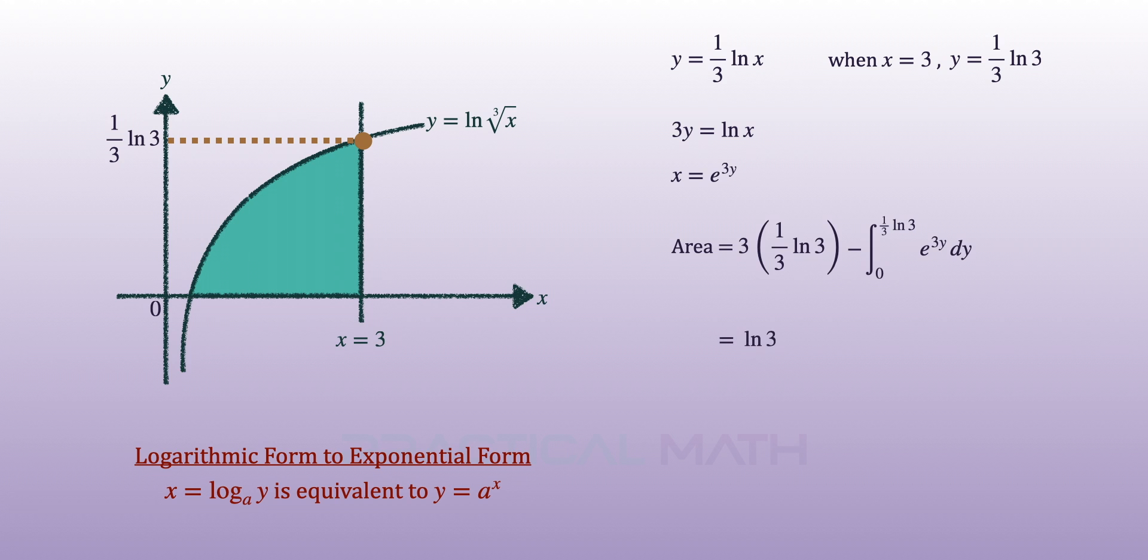Simplifying the first part will give us ln 3. Now let's take a look at the integration of exponential functions where we integrate e to the power of ax plus b dx is equals to e to the power of ax plus b divided by a plus c.